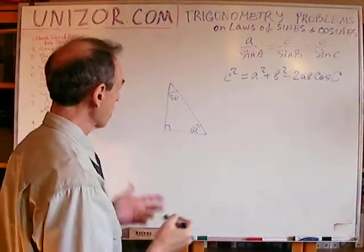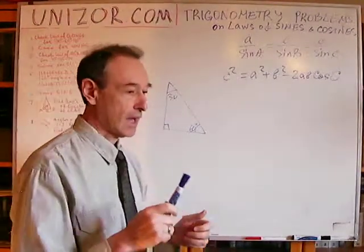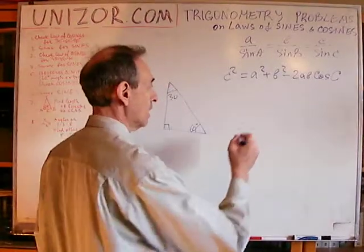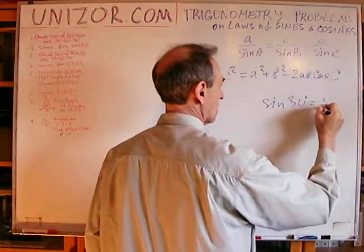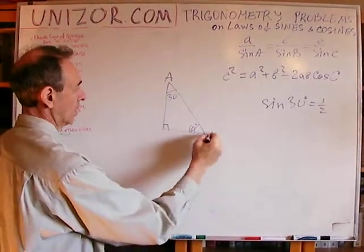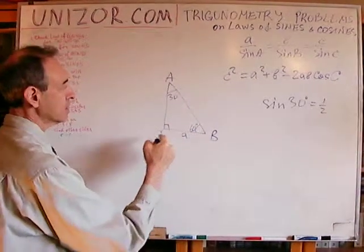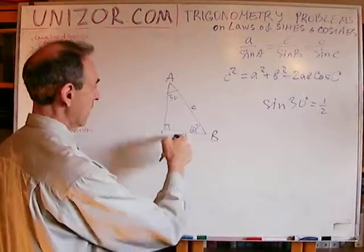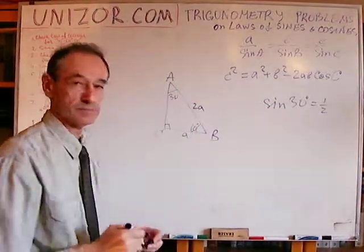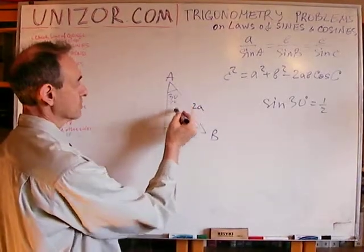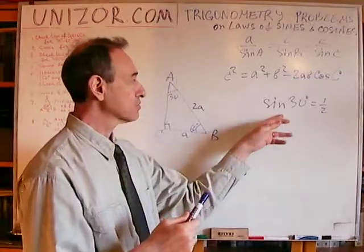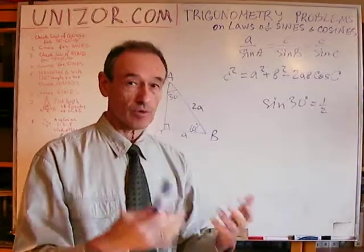Let's check the law of cosines first. I don't remember the values of sines and cosines of many different angles except one. In this 30-60-90 triangle, the side opposite to the 30-degree angle is half of the hypotenuse, so a is half of c, meaning c = 2a. That makes sine of 30° equal to one-half — it's a divided by 2a. That's the only fact I remember, and from it I can derive everything else.